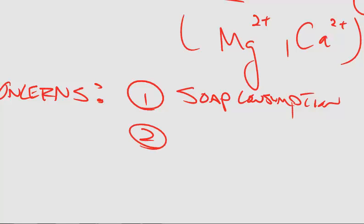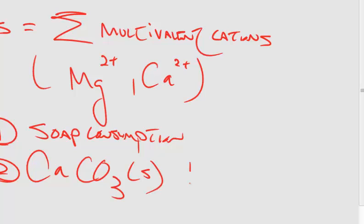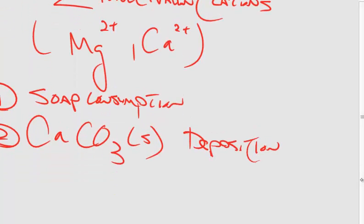Item number two: you get CaCO3 calcium carbonate deposition. This can happen a lot in pipes and home plumbing systems. As you increase the temperature of water, you're facilitating or increasing the reactions to precipitate calcium carbonate. That's kind of the sludge you get in your hot water heaters that are typically found in hard water areas.